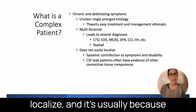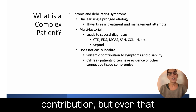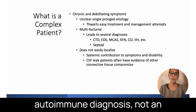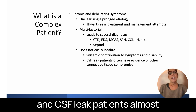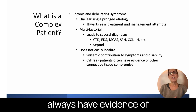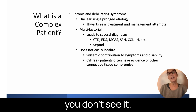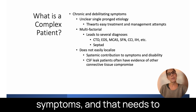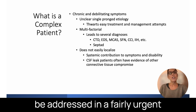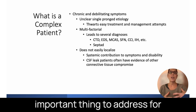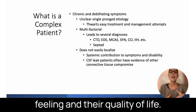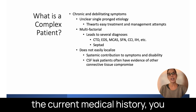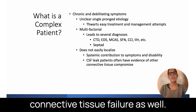These symptoms do not easily localize, and it's usually because there's more of a systemic contribution — but even that systemic contribution isn't obvious. So it's not an obvious autoimmune diagnosis, not an obvious metabolic diagnosis. And CSF leak patients almost always have evidence of connective tissue compromise. Sometimes you don't see it, but a CSF leak obviously presents with very debilitating, very acute symptoms that need to be addressed in a fairly urgent manner.